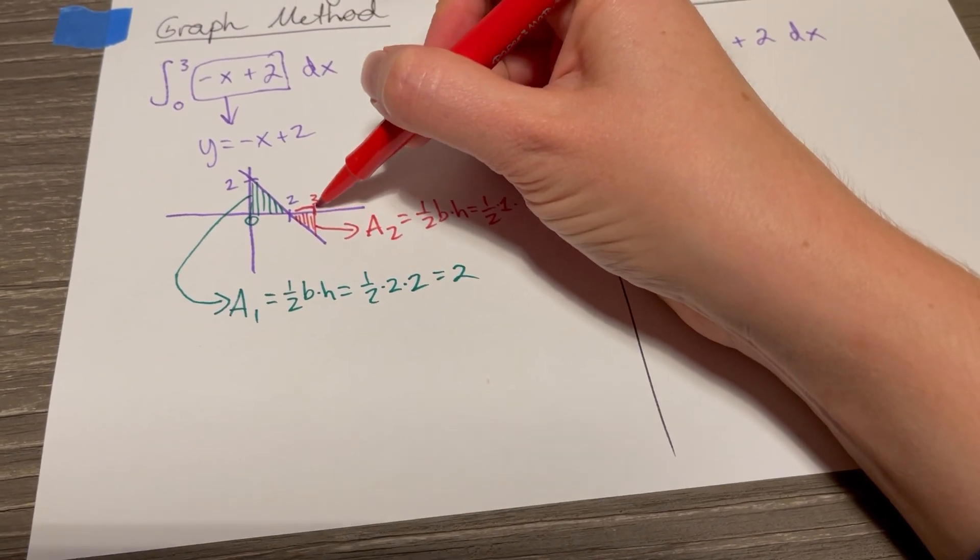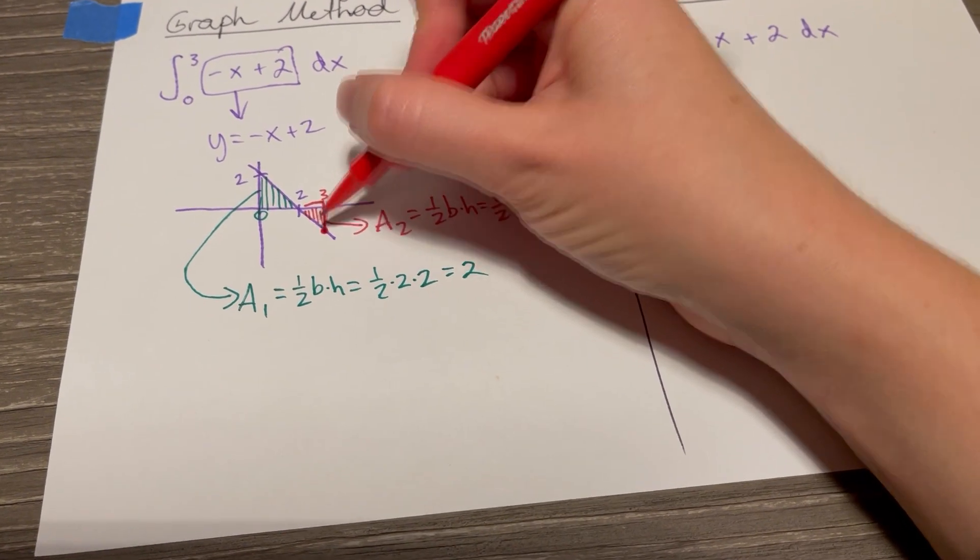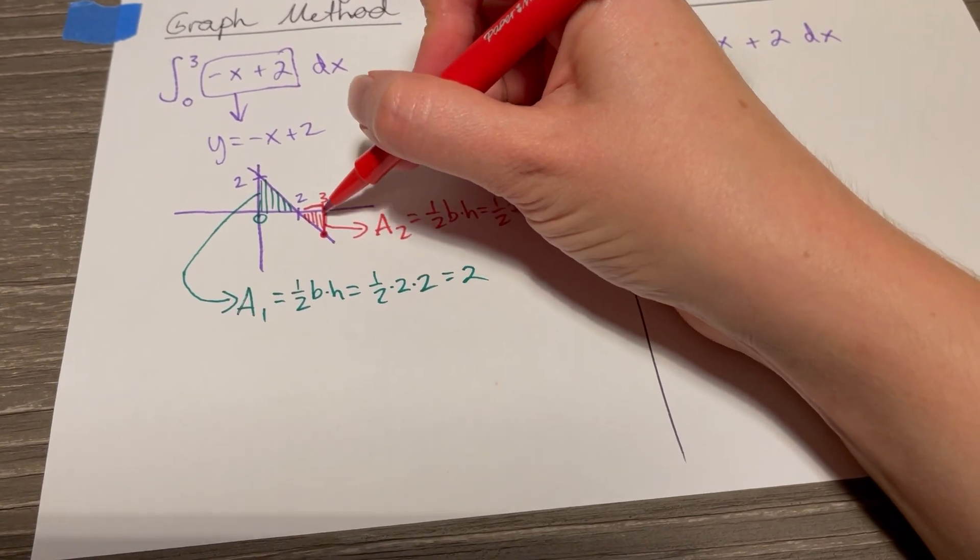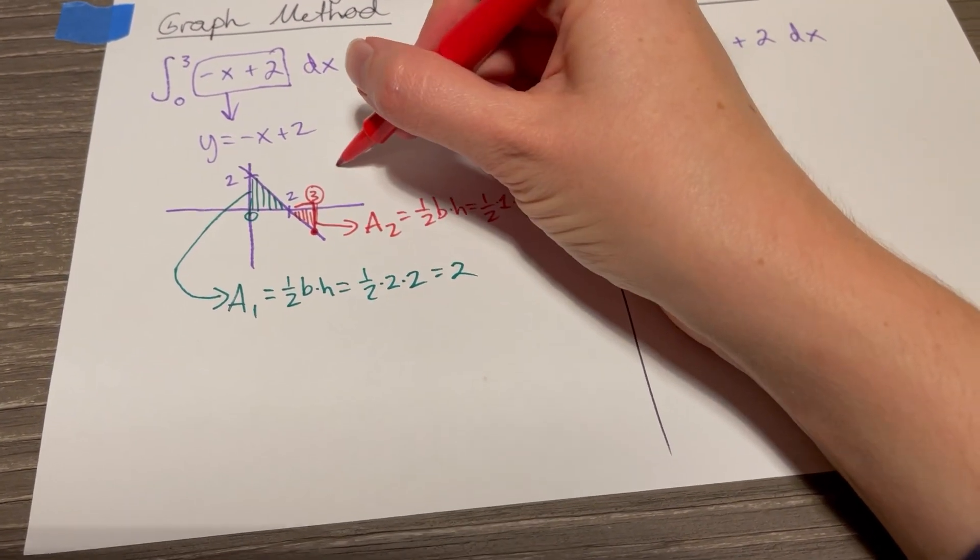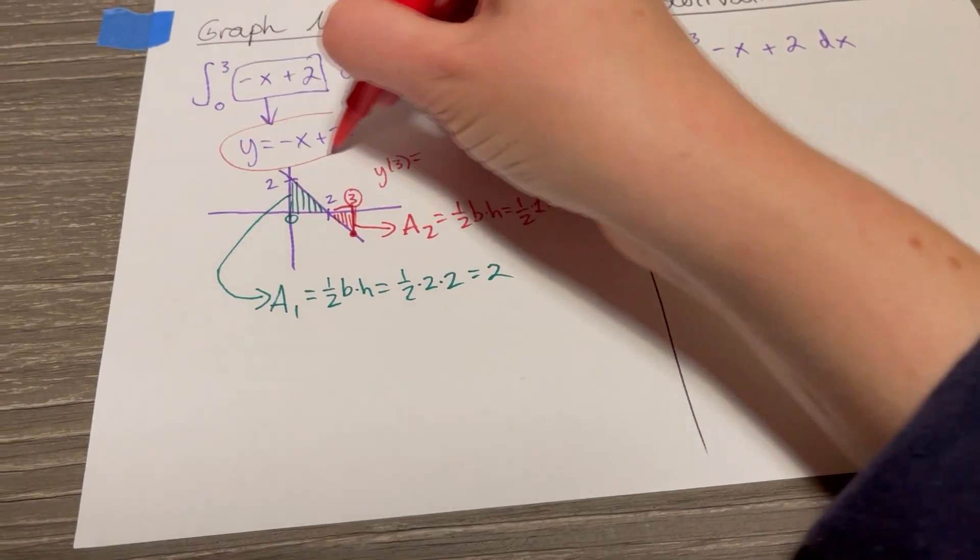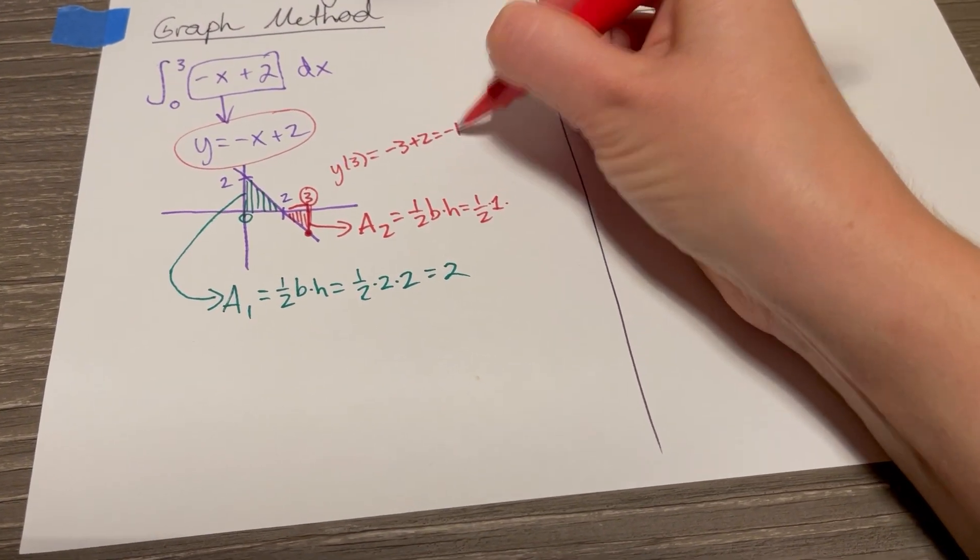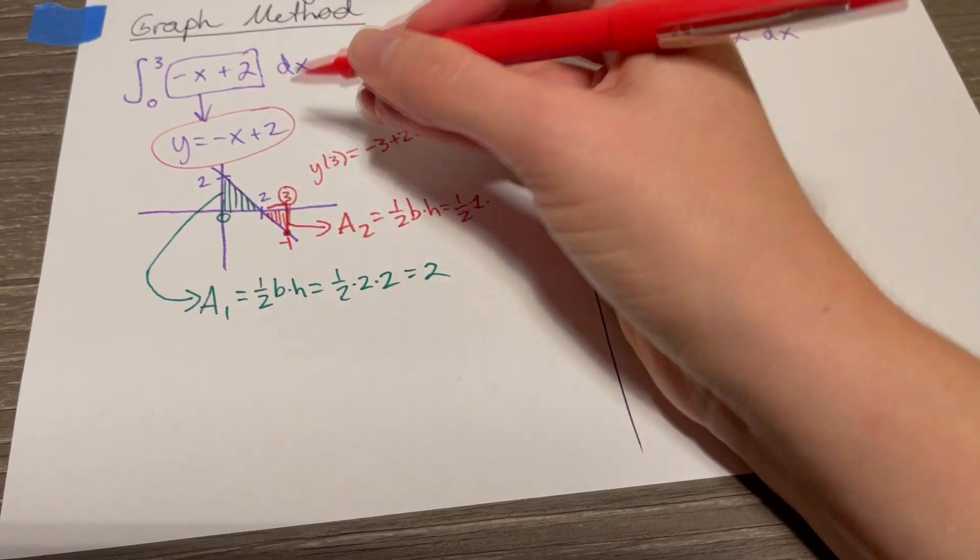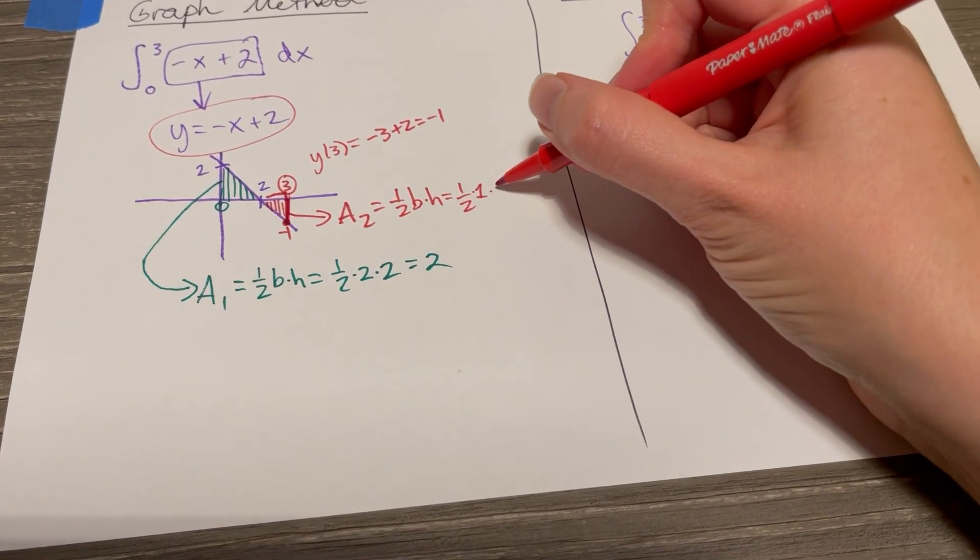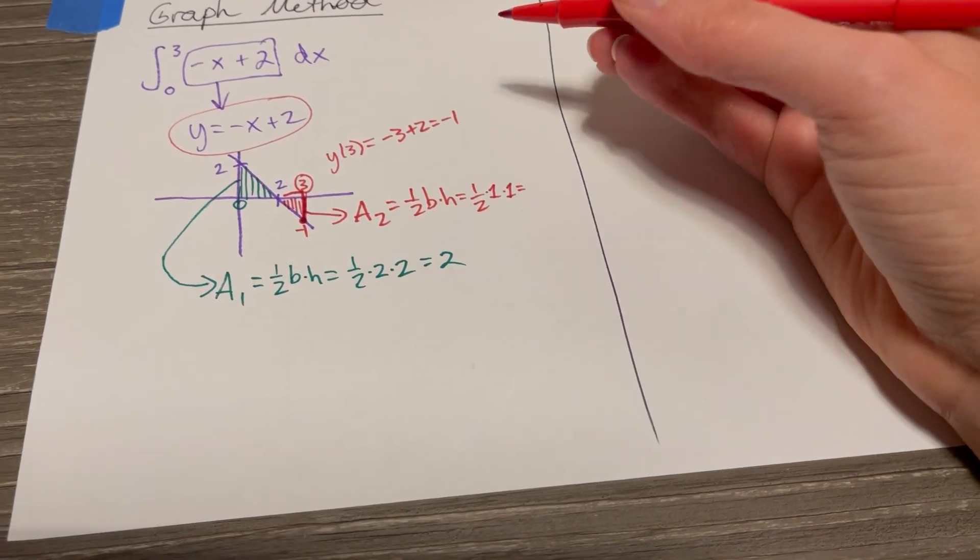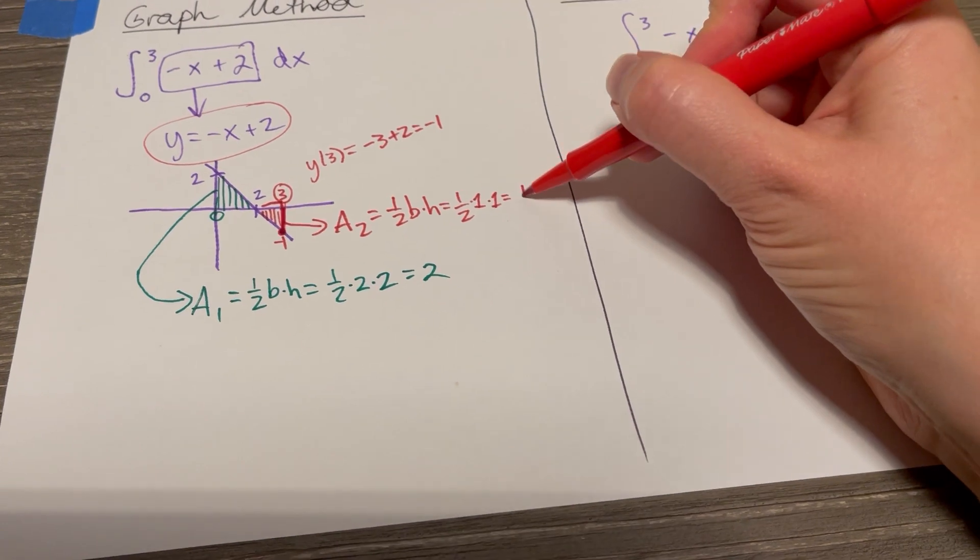And the height of this triangle, how do you figure out the height of this triangle? Well, if we want to know the height of a function at a given x value, you can just plug into the function y of three equals, using this, negative three plus two equals negative one. So this is down at negative one. This height of this triangle is one, if you're using, if you're just viewing it as a geometric shape. And so one half times one is one half.